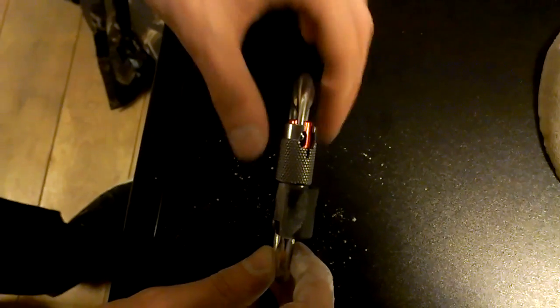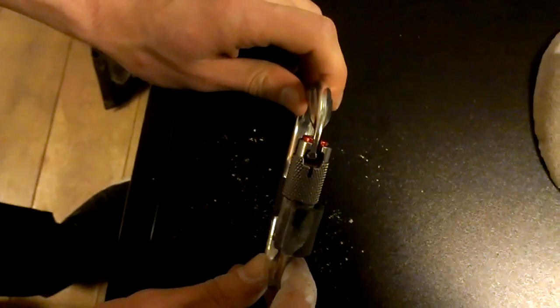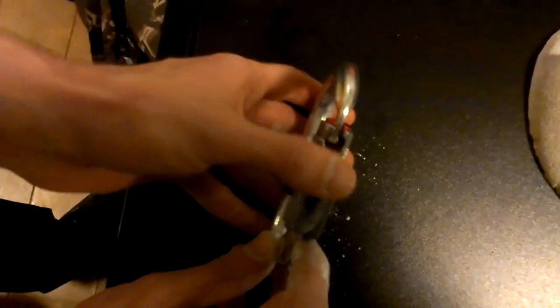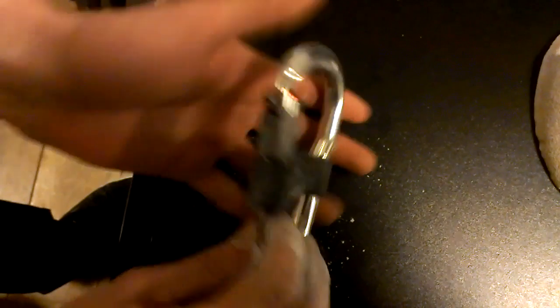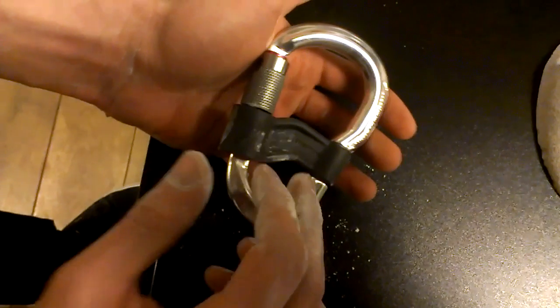Sometimes it even happens that it twists as far as the maximum like this, and in this case the only thing preventing the safe binder from opening is the plastic cap here, which clearly says it cannot withstand any loads.